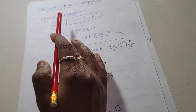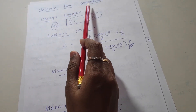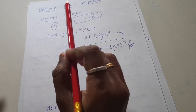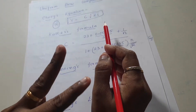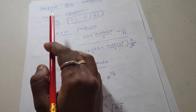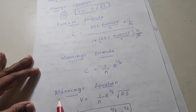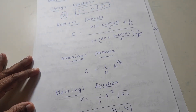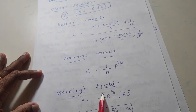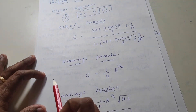The next topic is uniform flow calculations — how can we calculate uniform flow. For this, we are using two equations: Chezy's equation and Manning's equation. These two equations are used to calculate the uniform flow computations.